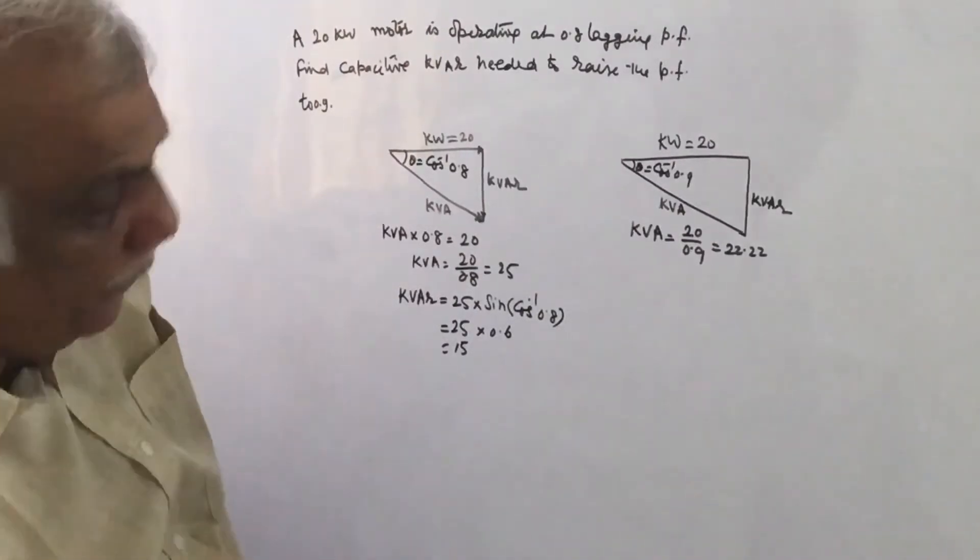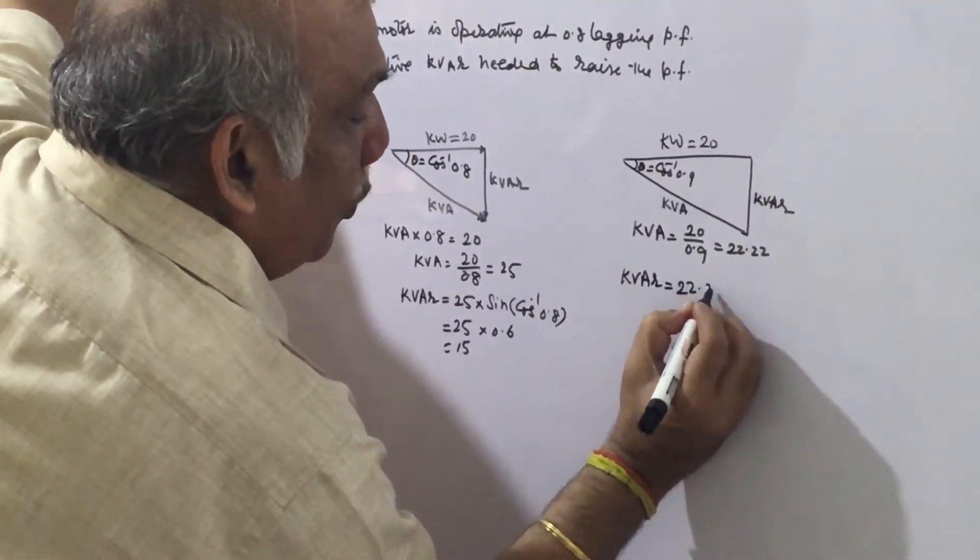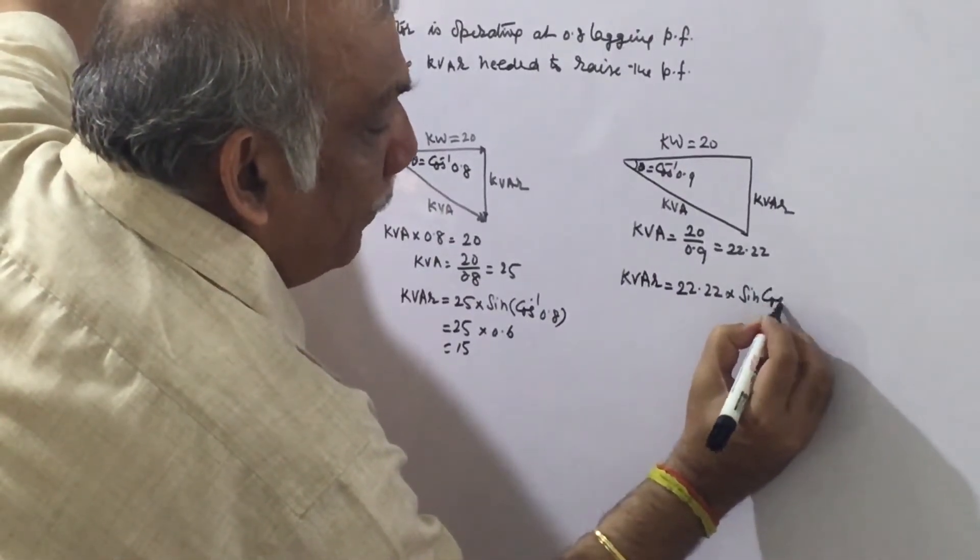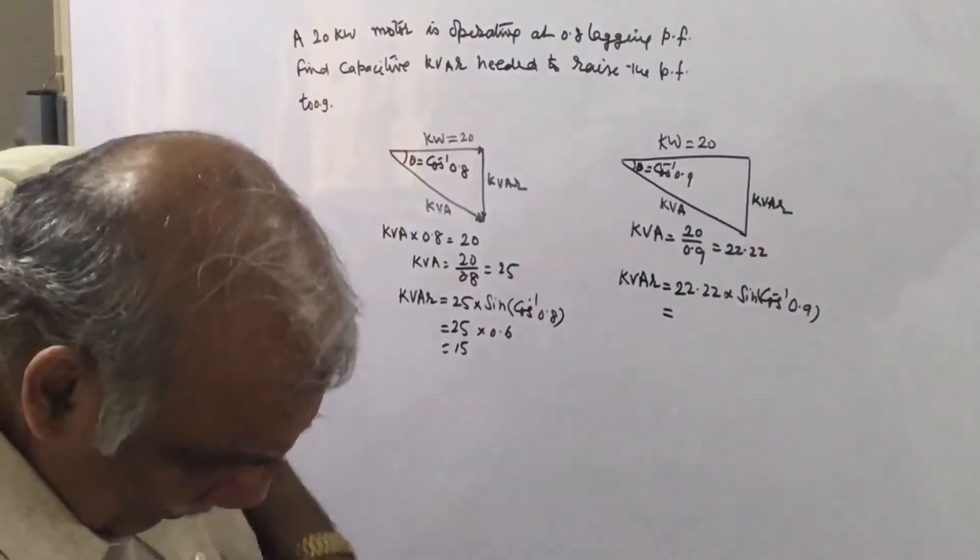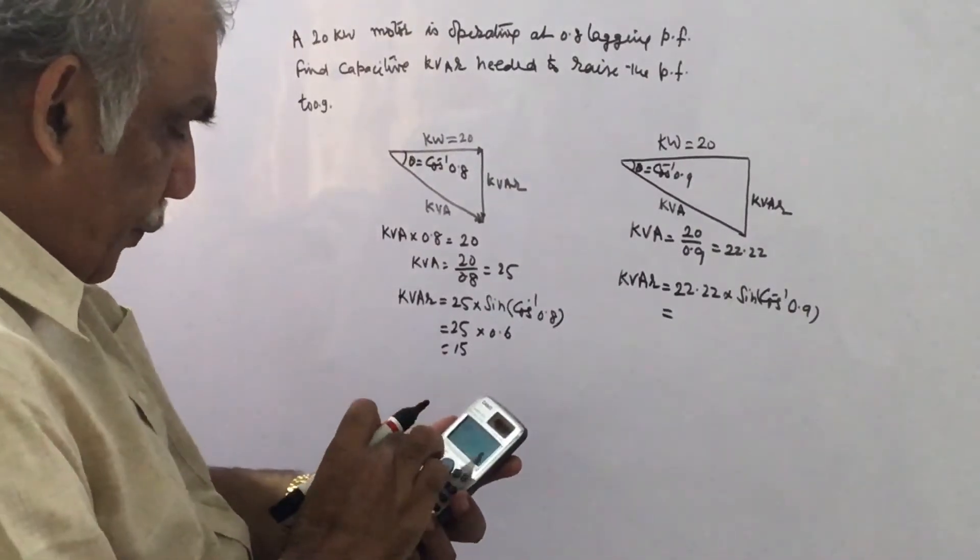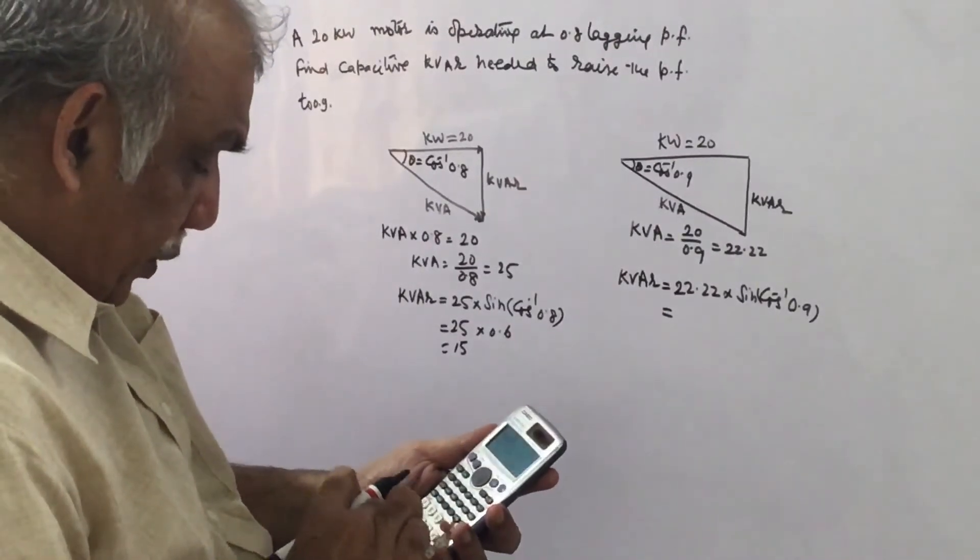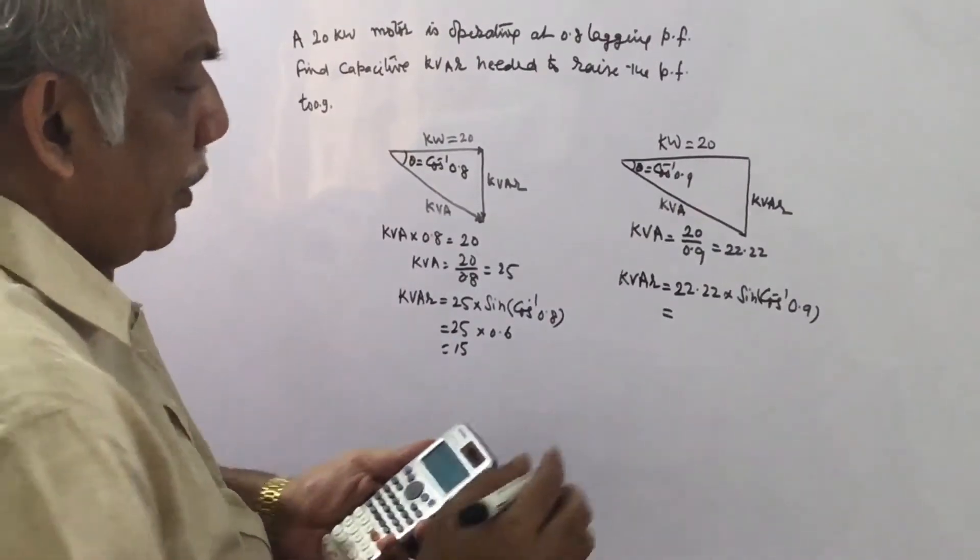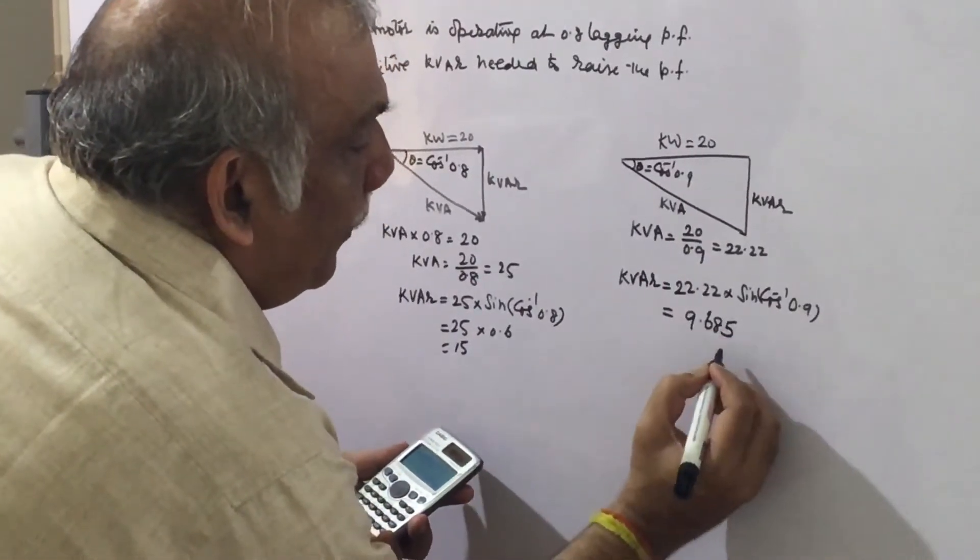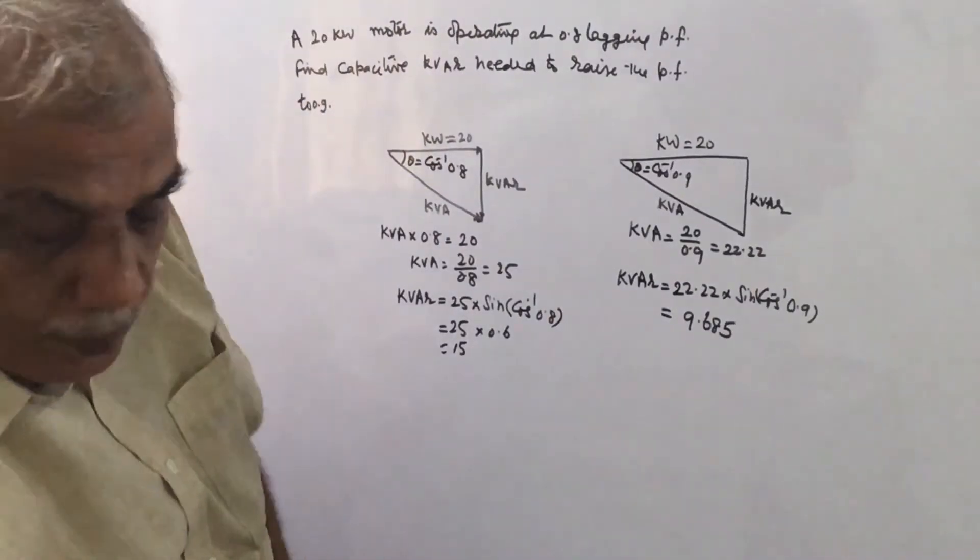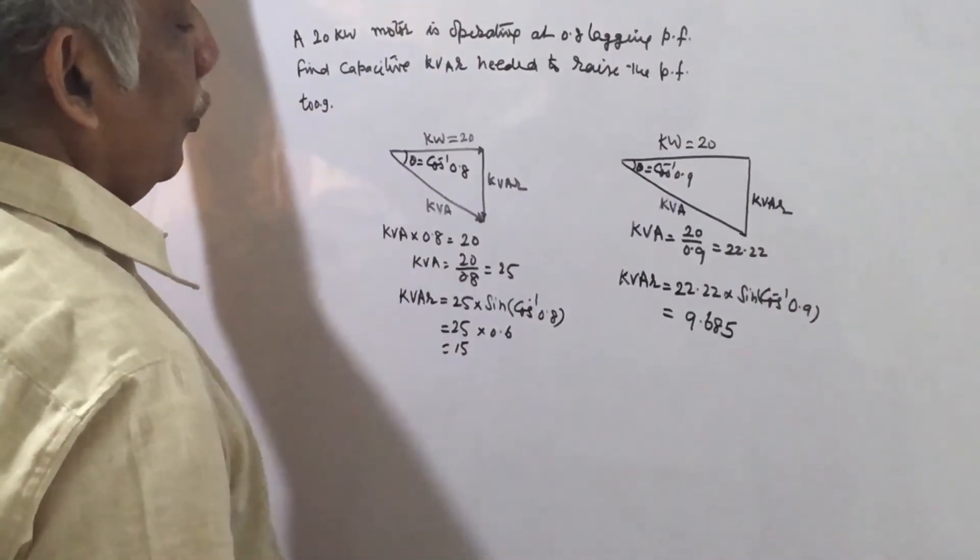And kVAR is 22.22 times sine of cos inverse 0.9, which is 9.685. So when the motor is operating at 0.9 power factor, the kVAR requirement is only 9.685.